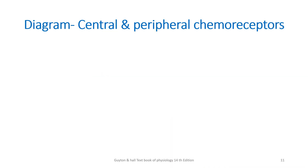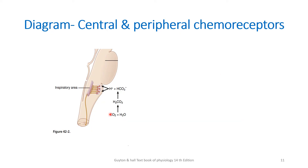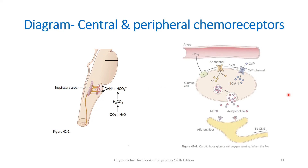When a question like this comes, you are expected to draw one or two diagrams at each level. For central chemoreceptors, draw a diagram showing the mechanism of action, its location, and its relationship with the respiratory centers. For peripheral chemoreceptors, draw a diagram showing its mechanism of action.